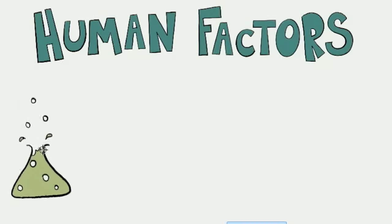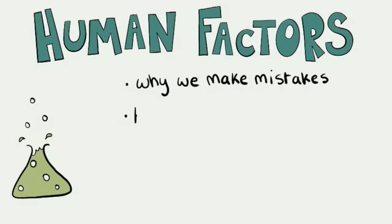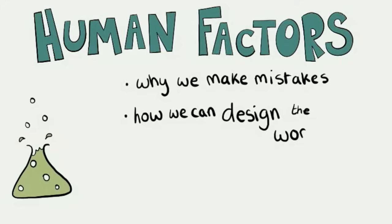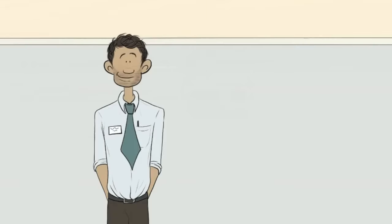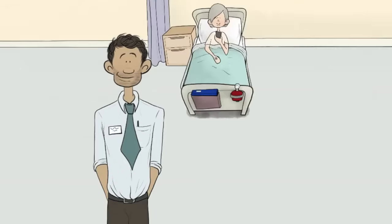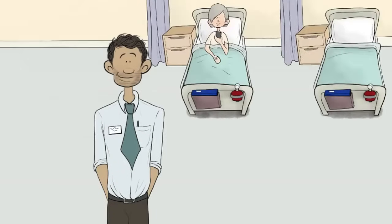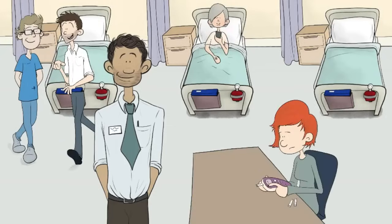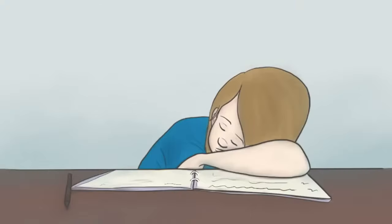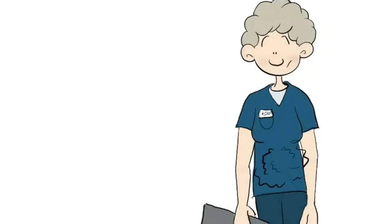These same principles apply when we try and do something for our patients. The science of human factors can explain why we make mistakes and how we can design the workplace to make it easier to do our jobs. Human factors describes how we interact with everything in the workplace — the physical environment, equipment, and the processes of care that set out how we are supposed to do things at work.